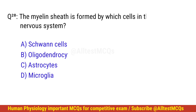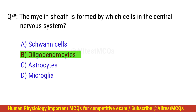Question number 28. The myelin sheath is formed by which cells in the central nervous system? The right option is B: Oligodendrocytes.